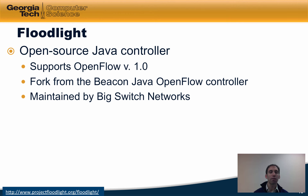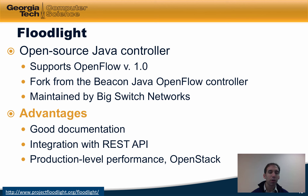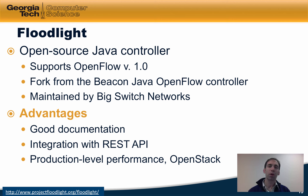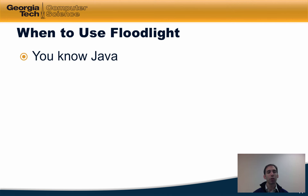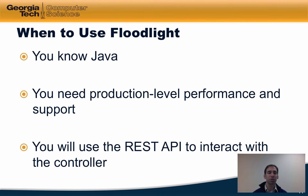Floodlight is an open source Java controller that supports OpenFlow 1.0 and is a fork from the Beacon Java OpenFlow controller, maintained by Big Switch Networks. Advantages include very good documentation and integration with the REST API — a software architecture developed by the World Wide Web Consortium often used in client-server architectures. One disadvantage is that the learning curve is somewhat steep. You might use Floodlight if you already know Java, need production-level performance and support, and plan to use the REST API to interact with the controller.